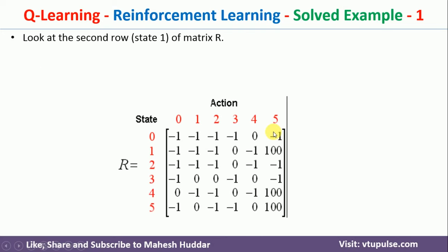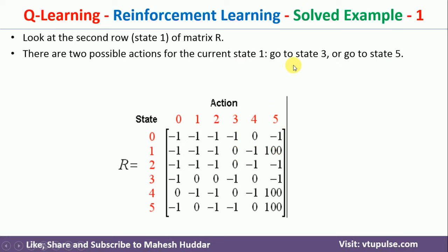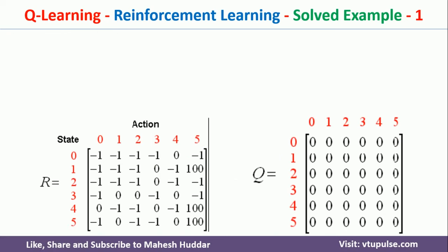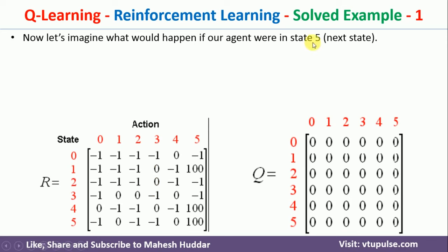We start with initial state 1. From state 1, we can perform two actions: action 3 or action 5. Performing action 3 gives an immediate reward of 0; performing action 5 gives an immediate reward of 100. We select action 5. The immediate reward is 100 and the next state becomes 5. So the current state is 1, the next state is 5, and the immediate reward is 100.